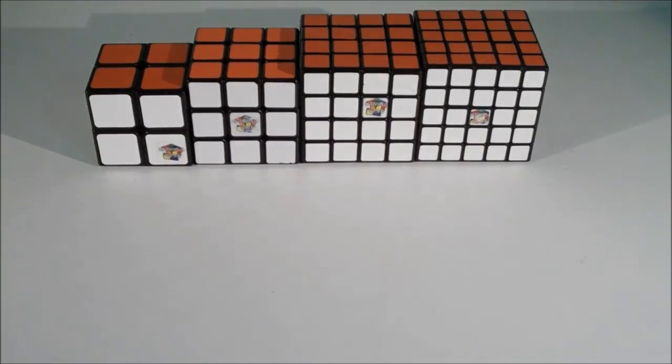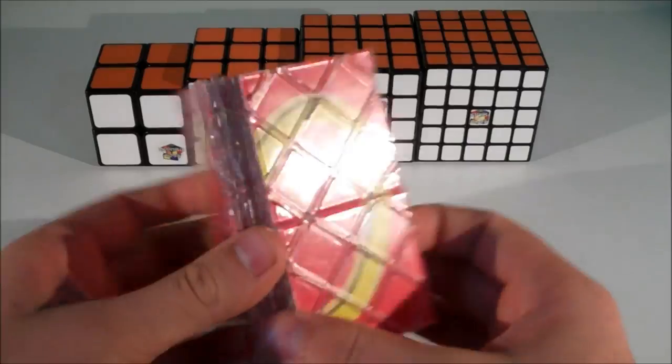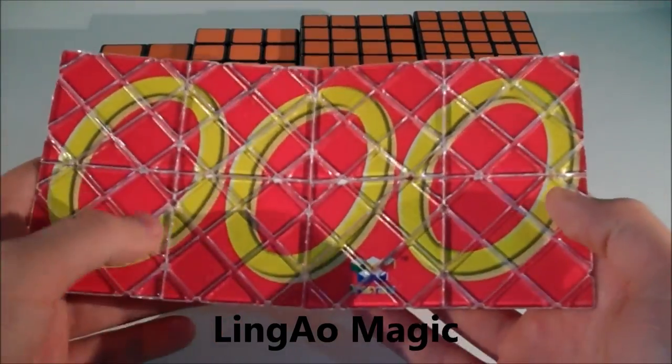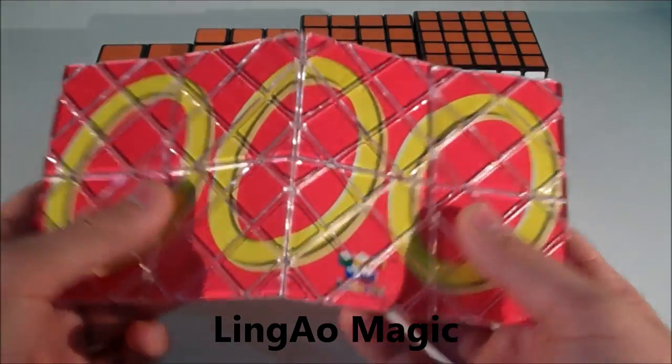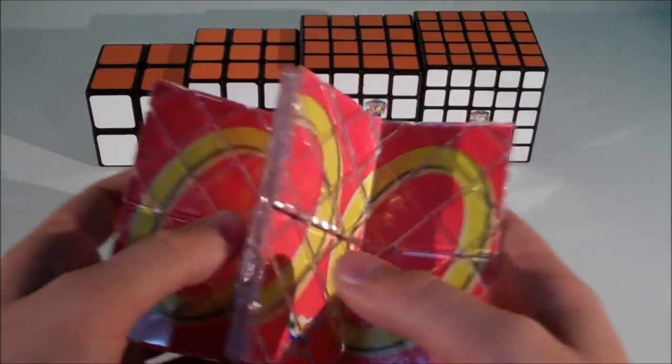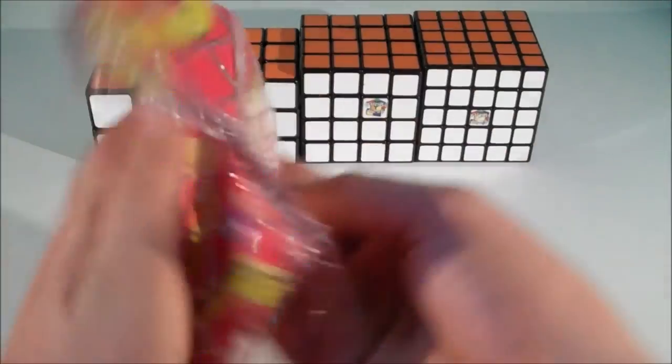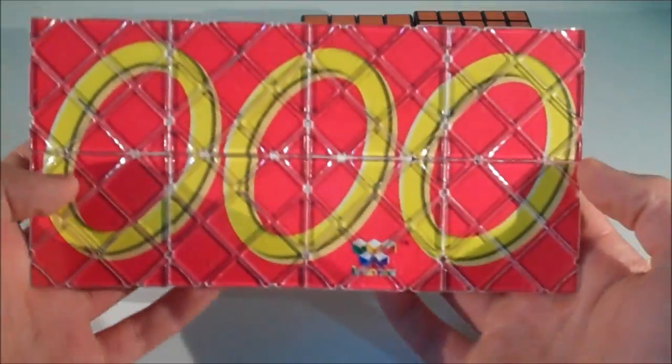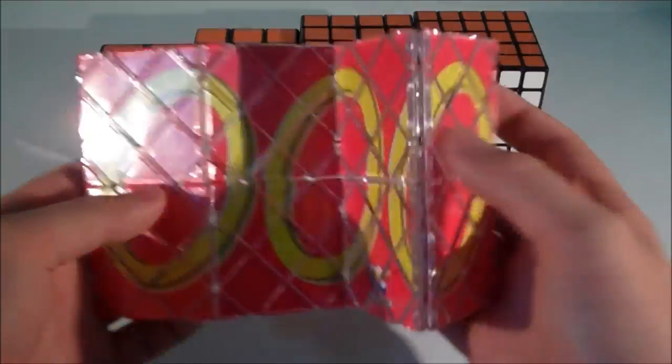So the last puzzle that I am doing for the UK Open is Magic. For Magic, I use the Lingal Magic. But I don't really do Magic that often, so I am not that good at it. I can get about 2 to 3 second solves on it. It turns okay, but I always find that the tiles lock up on this last turn here and that kind of slows me down a bit. But I think that might just be me and not the puzzle. So like I said, I don't really do Magic that much.